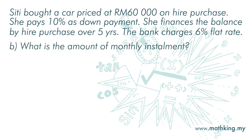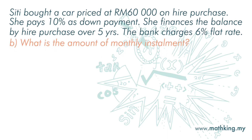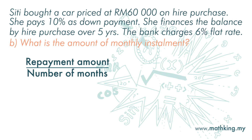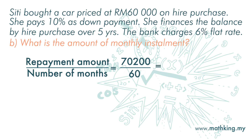B: What is the amount of monthly instalment? To get the monthly instalment, we divide the total repayment amount by the total number of months. So it is 70,200 ringgit divided by 5 years times 12 months, which is 70,200 divided by 60 months, and that is 1,170 ringgit of monthly instalment.